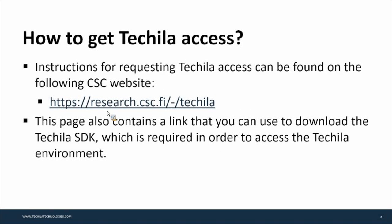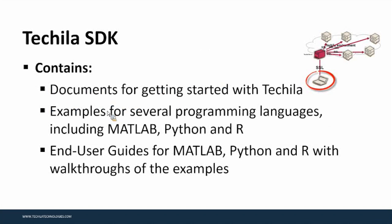To get Tequila access, CSC has a website with a getting started section listing the steps you need to follow. This page also contains a link to download the Tequila software development kit. The Tequila SDK contains lots of useful material for getting started, including examples for several popular programming languages including Matlab, Python, and R, with thorough documentation. Pretty much all of the information covered in this webinar can also be found in the documentation.